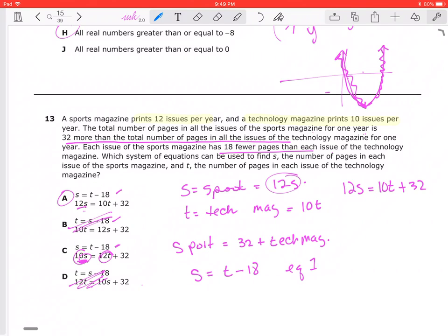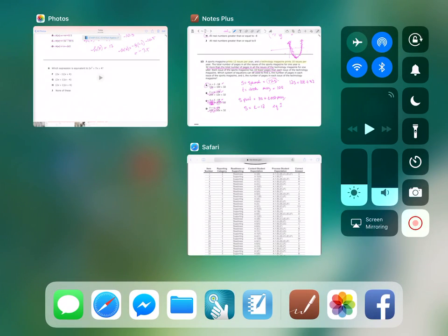The other one here would be the difference to that is if you did 10S, 10 sports magazines, 10 pages. Again, that won't work. So our answer choice is A. Okay, I'll see you in the next video.